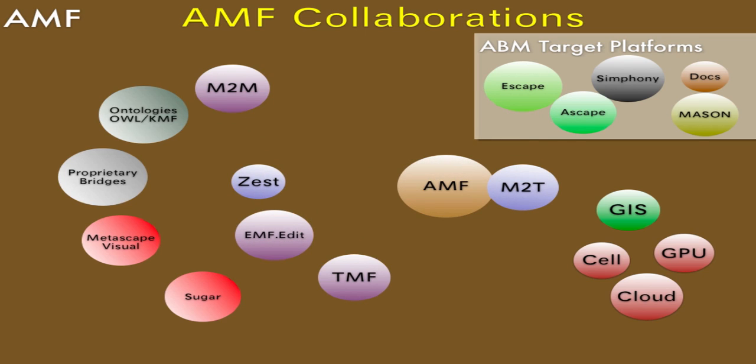So here is how this fits in with all the other pieces and how it's intended to work. AMF acts as a hub where you have a lot of different sources for models — everything from the EMF edit models and the hierarchical models, which we'll demonstrate in another screencast, to textual models like Sugar that we'll describe in the Metascape visual environment.